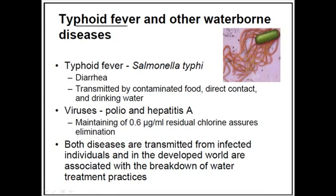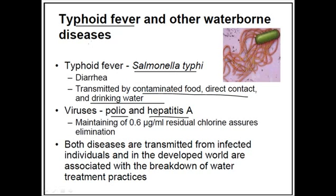The second disease is typhoid fever, which is associated with different diarrheal diseases and causes fever because it is enteric — it raises body heat. This bacteria is caused by Salmonella typhi and is also found in water. It causes diarrhea and can be transmitted by contaminated food, direct contact, and also drinking water. Symptoms include high fever, abdominal cramps, and blood can be released with your stool.